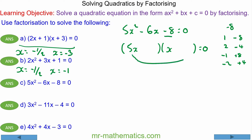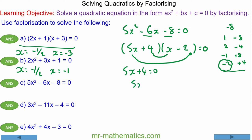This term times that term, added together, must make negative 6x. So we multiply one of these numbers by 5 and add it to the other. Negative 2 times 5 is negative 10, and negative 10 add 4 makes negative 6. So negative 2 goes in the 5x bracket and positive 4 in the x bracket. The solutions are: when 5x plus 4 equals 0, x equals negative 4 fifths; and when x minus 2 equals 0, x equals 2.